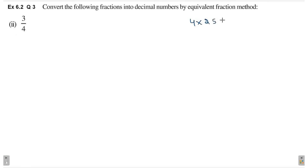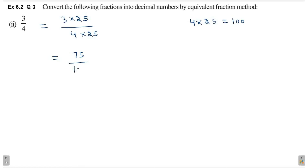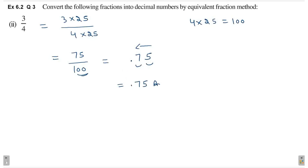Second part hai 3 by 4. So, 4 ko agar 25 se multiply kareenge to we will get 100. So, we will multiply numerator and denominator by 25. 3 into 25 divided by 4 into 25. This is equal to 75 divided by 100. Ab humane lagana hai decimal. Numerator ka number likh lo, 75. Denominator mein 1 ke baad hai two zeros. So, right more side se two digit count karke left hand side pe humane lagana hai decimal. One digit, two digit, left hand side pe lag gaya decimal. So, 0.75 is the answer.